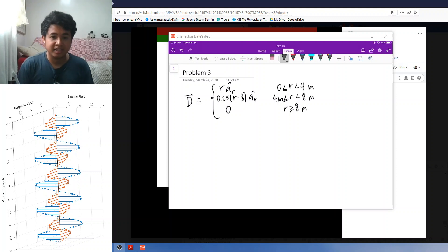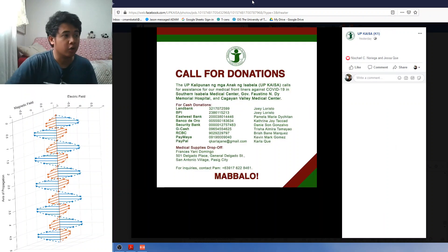Hi, this is the discussion for Problem 3 of Problem Set 1 of AAA23 this semester. Before we start, I just want to plug, due to the situation right now that we're having, our organization UP Kaisa, or Kalipunan ng Mga Anak ng Isabela, are looking for donations for our hospitals back in Isabela.